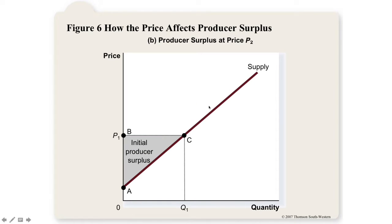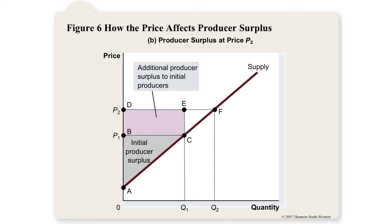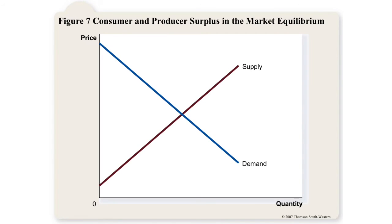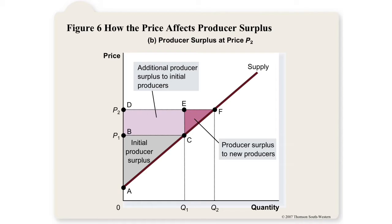If the price goes up, producers are better off — similar to what happens on the demand side. Existing sellers get more surplus, represented by a rectangle. Additionally, new sellers can enter the market and earn surplus, represented by a new triangle. The total producer surplus is represented by the entire larger triangle.